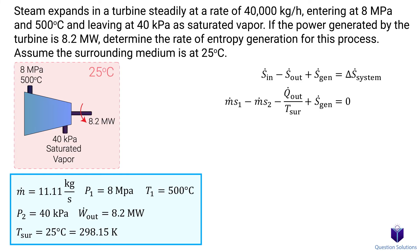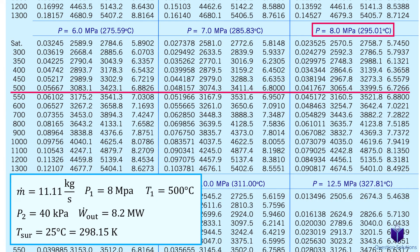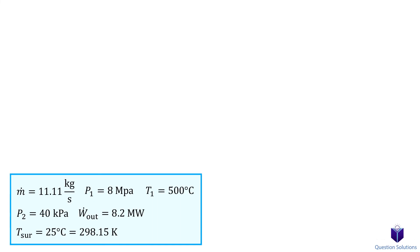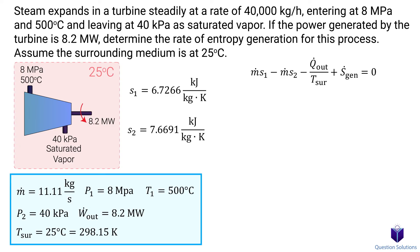We can find entropy values from steam tables. For s1, at 8 MPa and 500°C, here is the entropy value. For s2, at 40 kPa as a saturated vapor, here is the entropy value. To find the heat output, we write an energy balance equation for the steady flow turbine: energy in equals energy out. Mass flow and enthalpy enter; mass flow, enthalpy, turbine power, and heat loss go out. Since we aren't given steam velocity, we consider the change in velocity negligible.